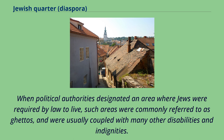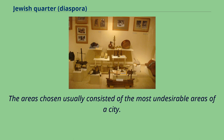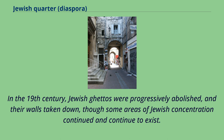When political authorities designated an area where Jews were required by law to live, such areas were commonly referred to as ghettos, and were usually coupled with many other disabilities and indignities. The areas chosen usually consisted of the most undesirable areas of a city. In the 19th century, Jewish ghettos were progressively abolished and their walls taken down, though some areas of Jewish concentration continued and continue to exist.